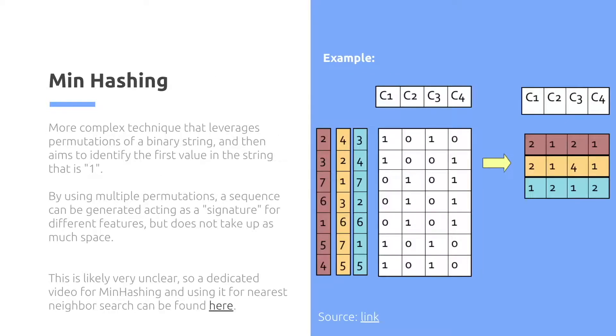Meanwhile, min hashing is a more complex technique that leverages permutations of strings in a binary string, and then aims to identify the first value in the string that is 1. So let's actually go through an example right here, because that's probably very confusing.